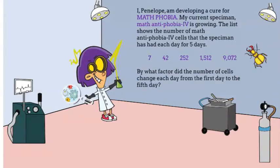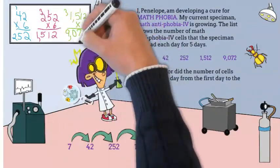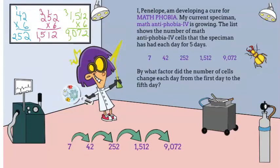I'm going to share my special project with you. I, Penelope, am developing a cure for math phobia. My current specimen, math antiphobia 4, is growing. The list shows the number of math antiphobia cells that the specimen has had each day for five days. By what factor did the number of cells change each day from the first day to the fifth day? I know that seven times six is 42, but does that work for the rest of the numbers? Let's do our calculations and find out. Yes, it works. Six is our scale factor.